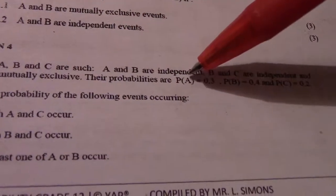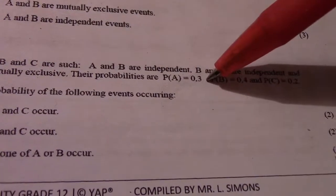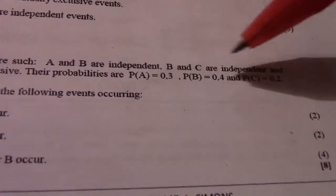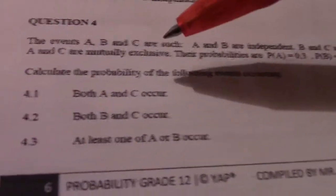The probabilities are given as probability A equals 0.3, B equals 0.4, C equals 0.2.